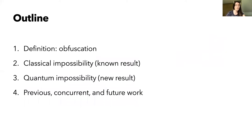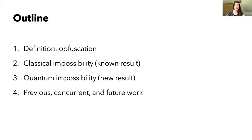After this informal definition of obfuscation, let's take a look at the plan for this talk. I'll first formalize the definition of the type of obfuscation we're looking at today: virtual black box obfuscation. Then I will walk you through the ideas behind a famous proof which shows that it's impossible to obfuscate programs into classical objects according to this definition. And then I will move on to our contribution, which was adapting that classical proof to show that a wider notion of obfuscation is also impossible — namely that we cannot even obfuscate classical programs into quantum objects. Finally, I will put our result into context of previous and concurrent work and comment on some open questions.